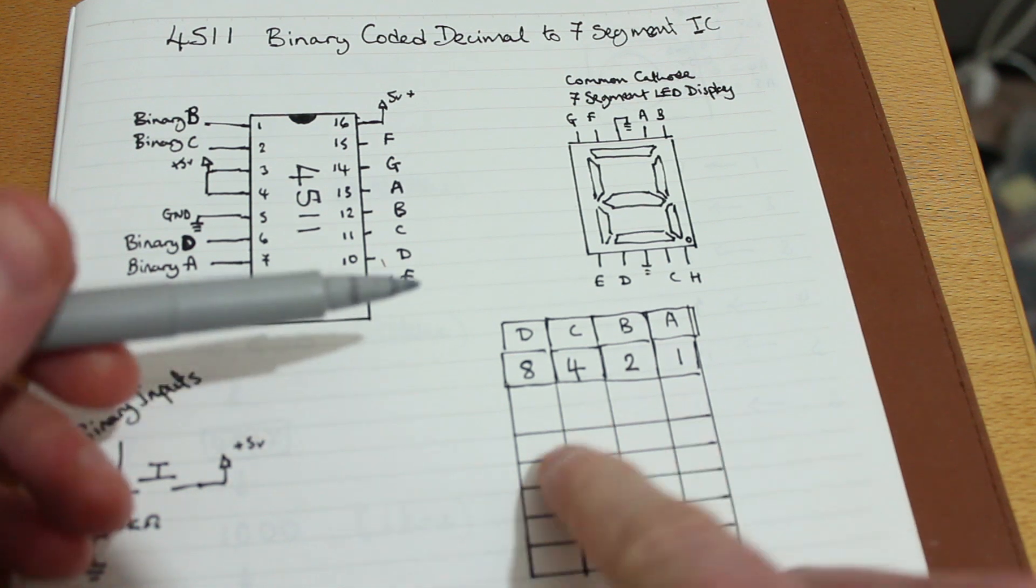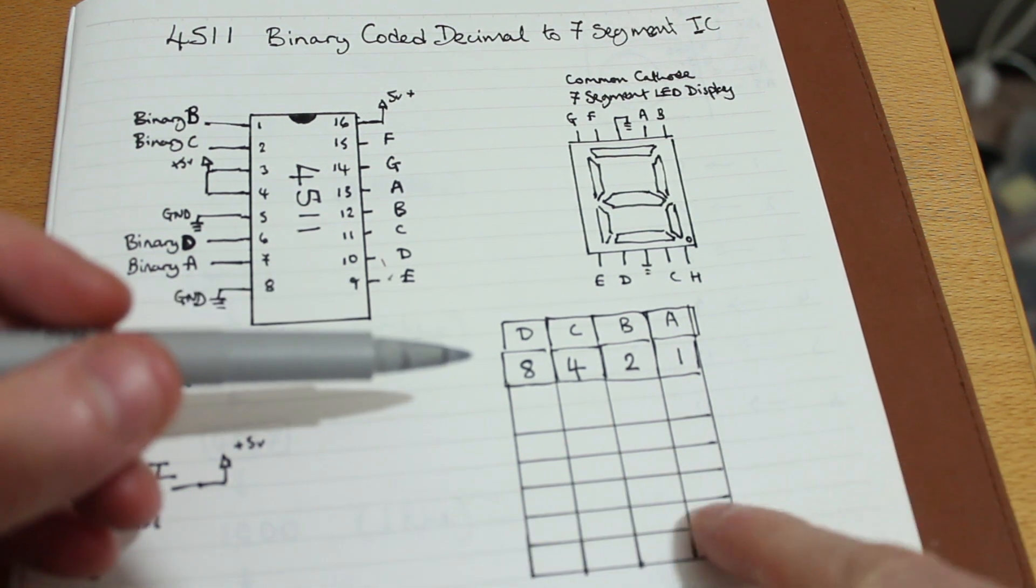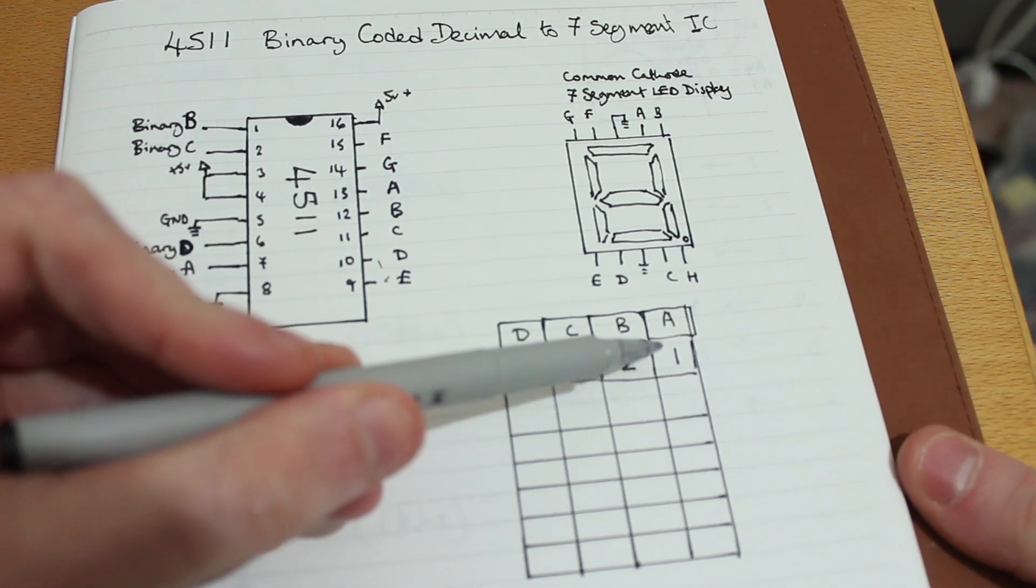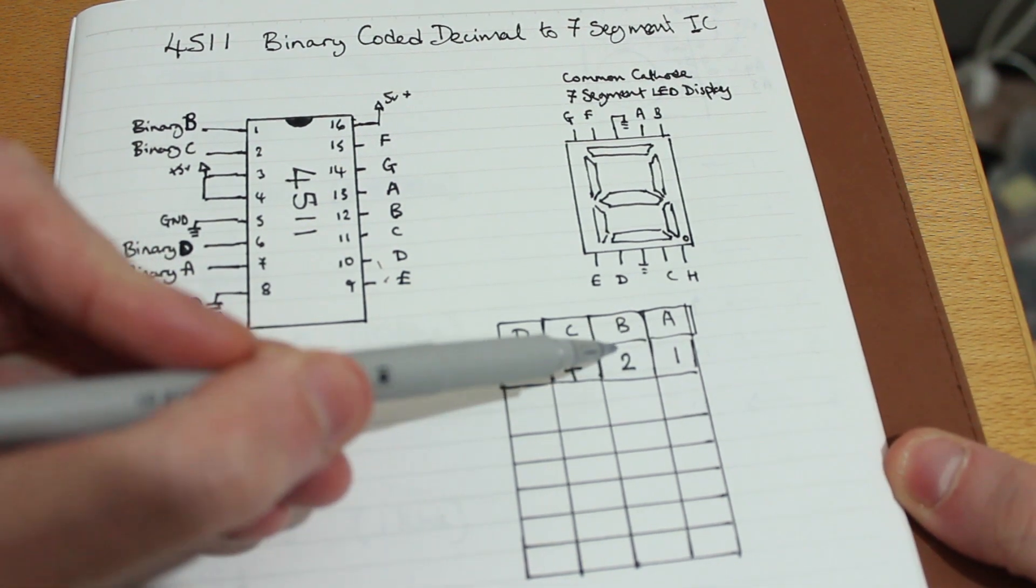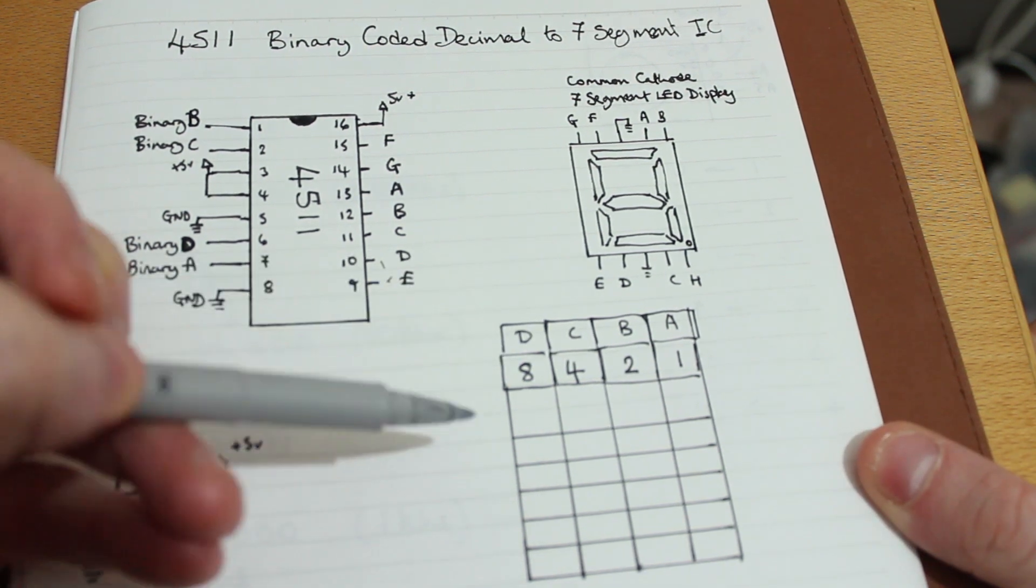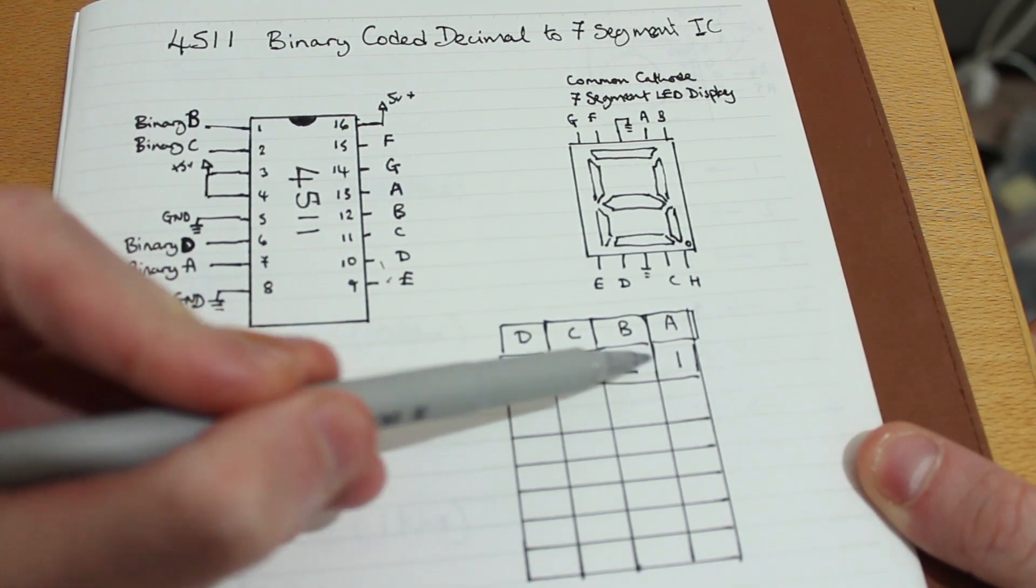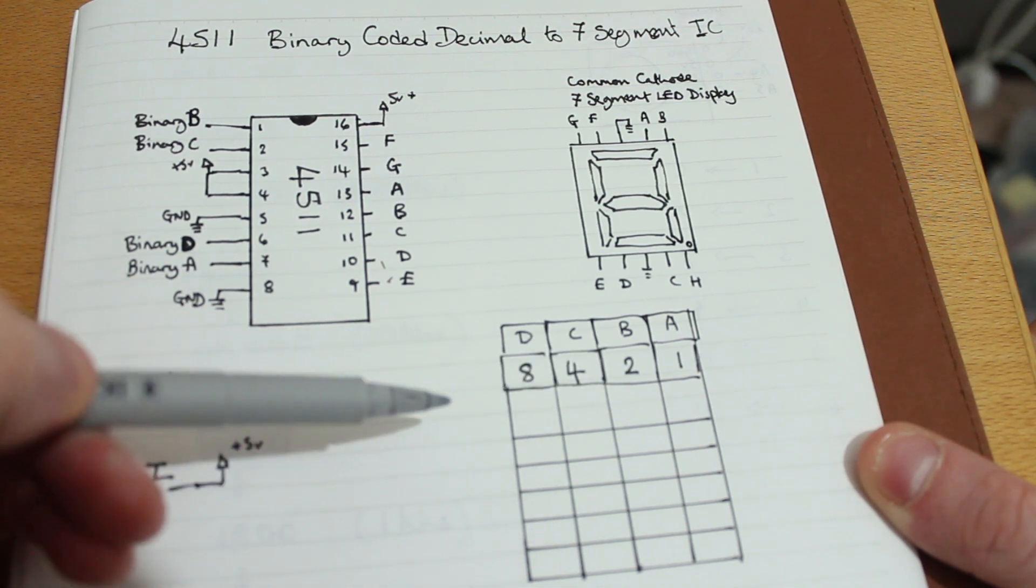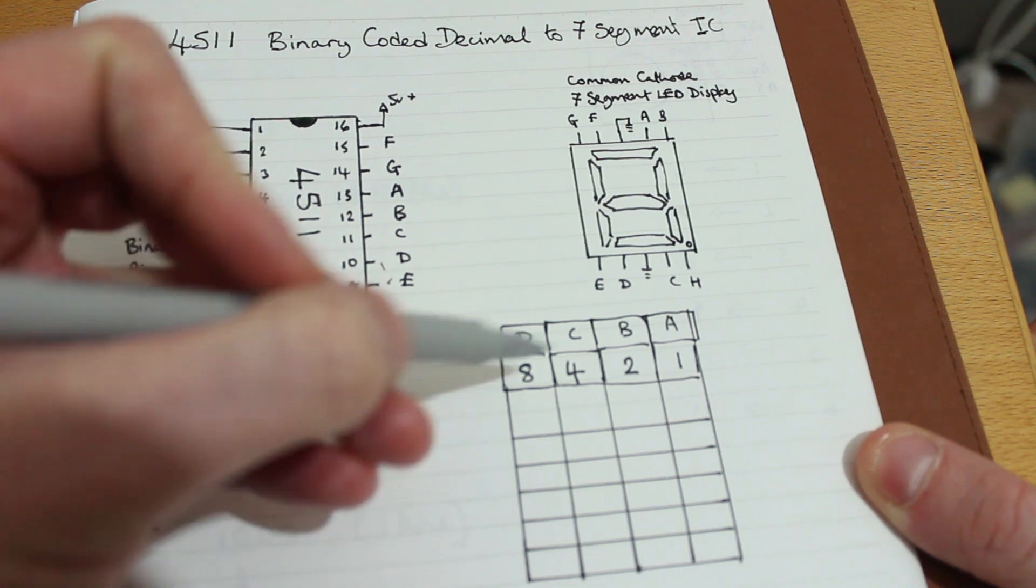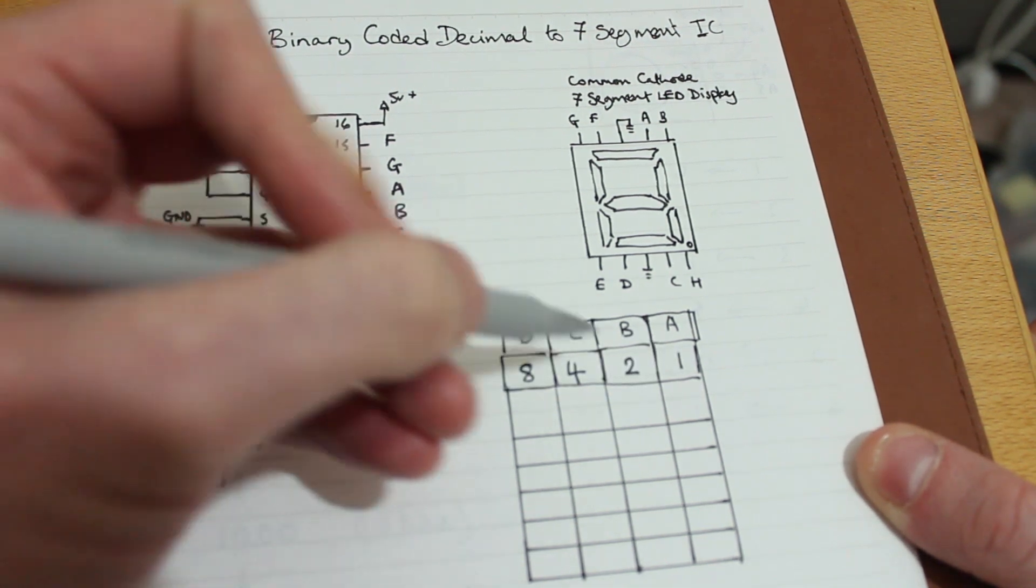So if we wanted to represent these numbers, we can use something like a truth table or rather it's just a reference table. So we know that input A is the first binary number. B is the next. C is the next. And then D is the next after that. And they represent 1, 2, 4, and 8. And from that, we can create all of our numbers. So 0 would be 0's all the way along. I'm not going to bother drawing that.